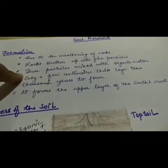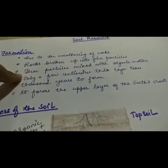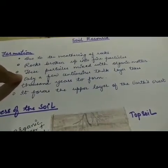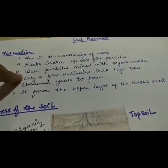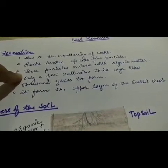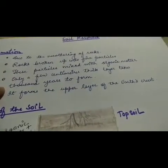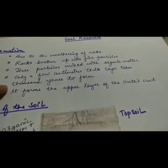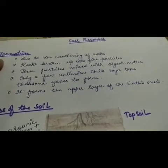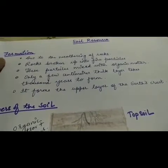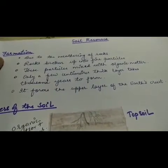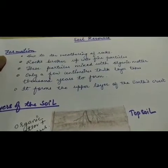Organic matter means dead and decaying animals and plants, which include humus in the soil and make the soil more fertile. With the help of rocks and organic matter, soil is formed. It takes a few centimeters thick layer thousands of years to form. So, soil is a renewable resource but the rate of formation is slow. It forms the upper layer of the earth's crust.